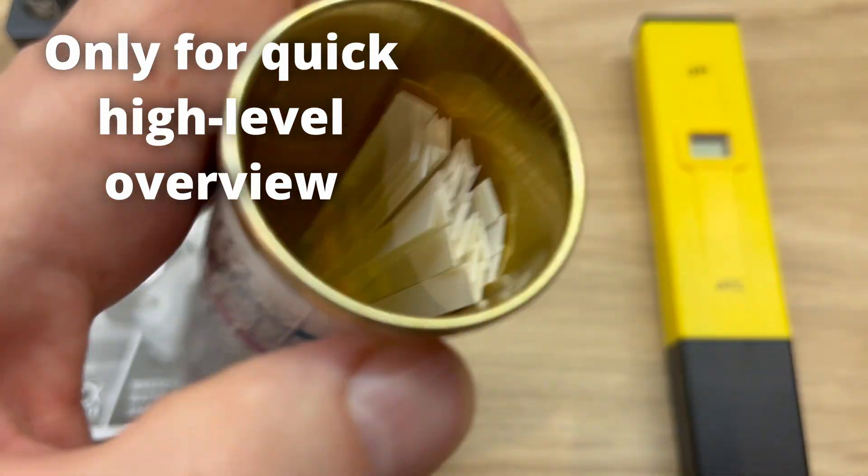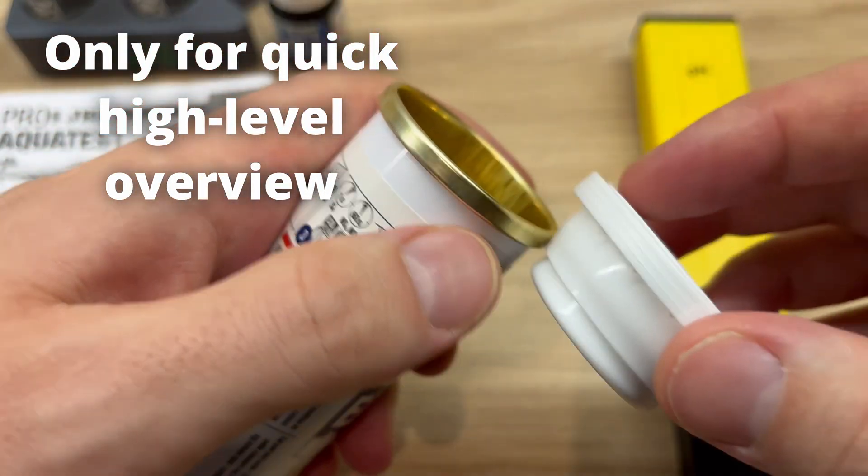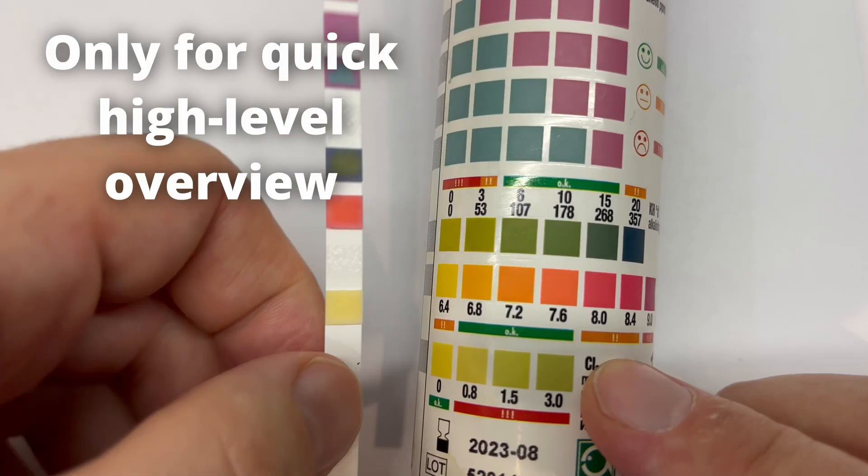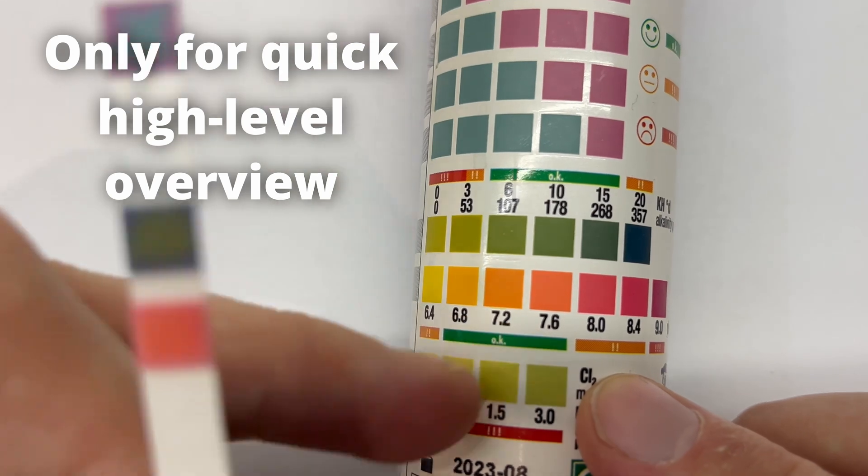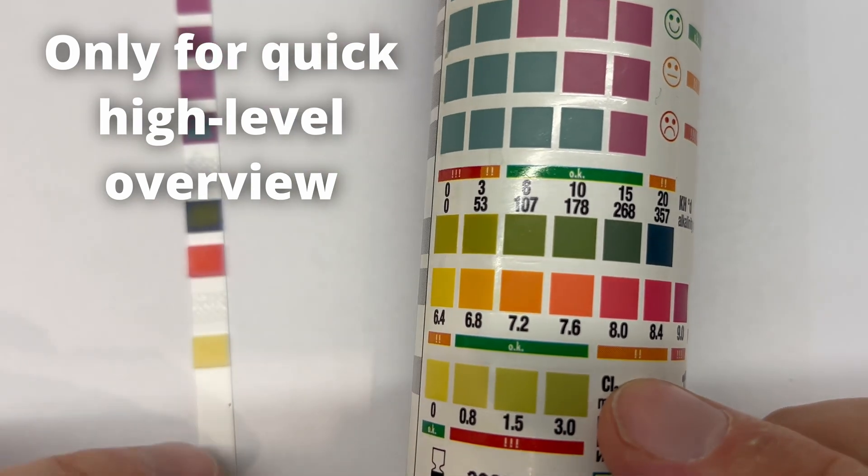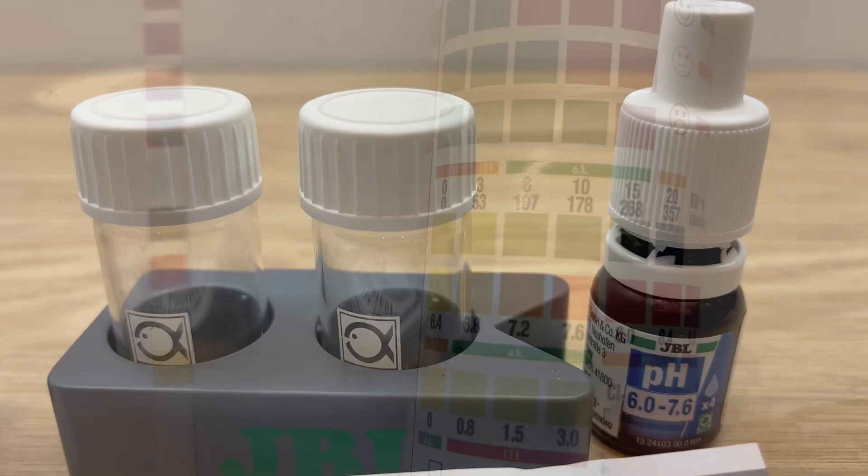So how I use those stripes is to do very quick and dirty measurements. But if some of the parameters looks to be out of range, then I bring the more precise methods like drop tests.